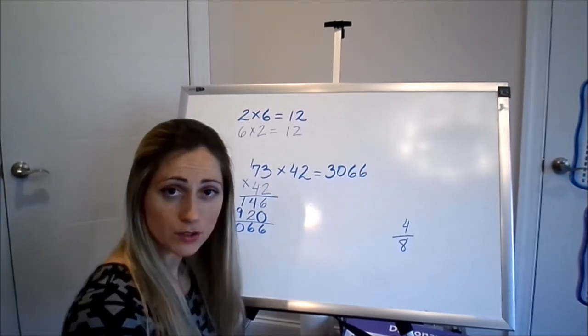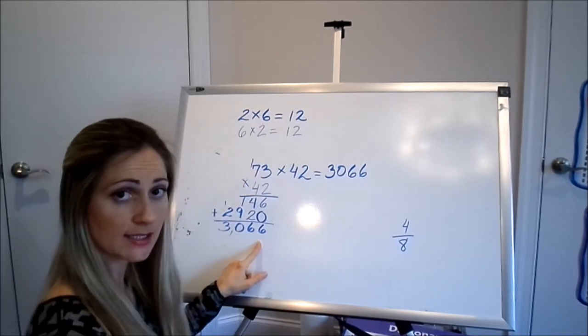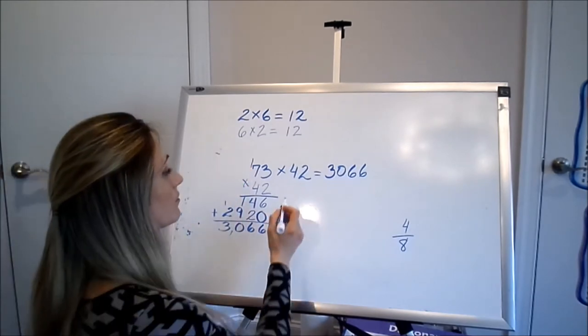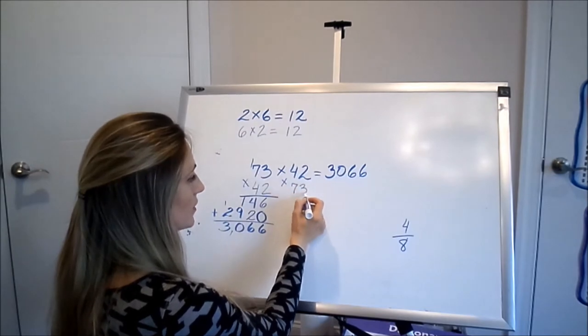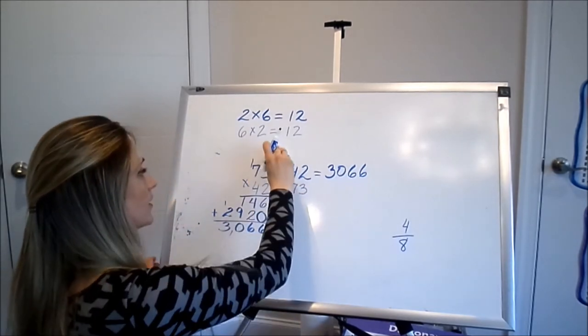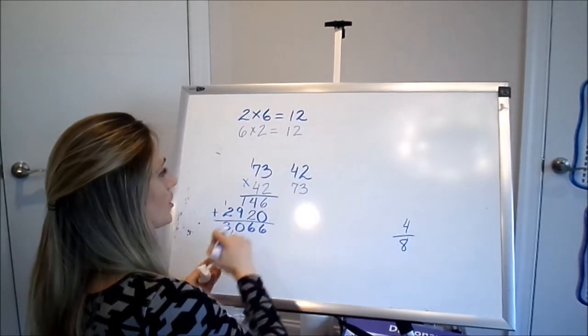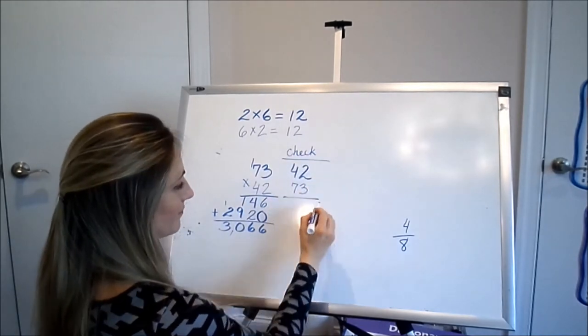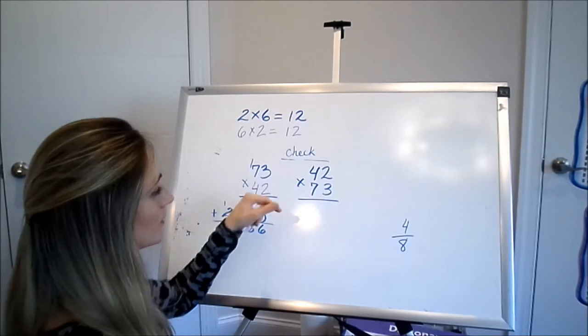So what we do to check if 73 times 42 really equals 3066, we're going to flip the 2 factors and we're going to multiply 42 times 73. And this is what it's going to look like. This is how you check double digit multiplication.